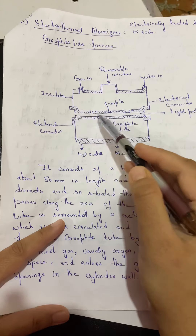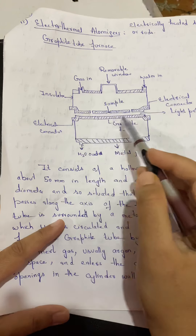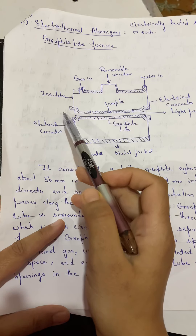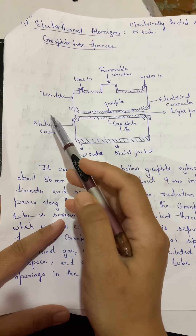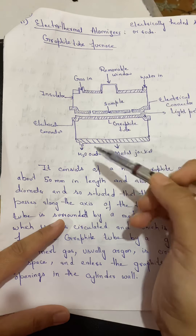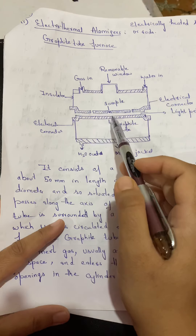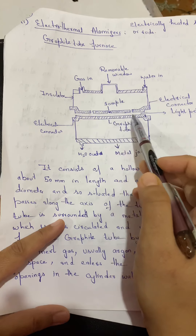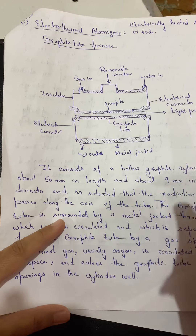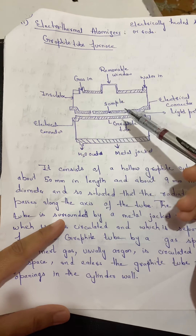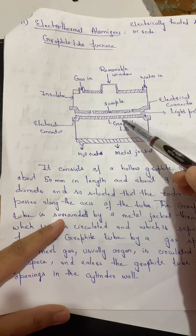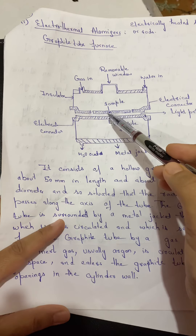The graphite tube has two windows on both sides, forming the optical path through which light passes. We have a hollow cathode lamp which produces radiation of our desired wavelengths. The light passes through the sample in the tube and goes on to the monochromator, detector, and readout devices.